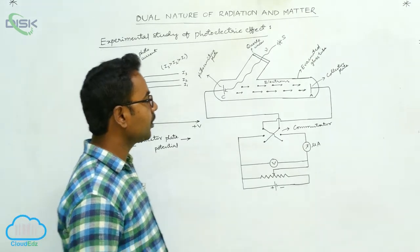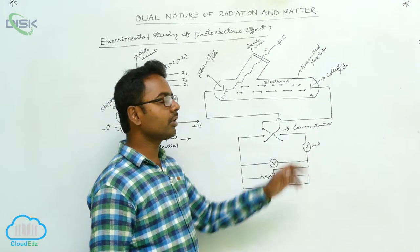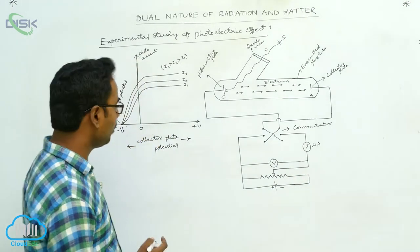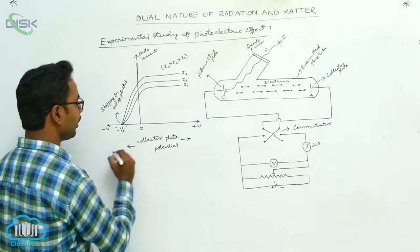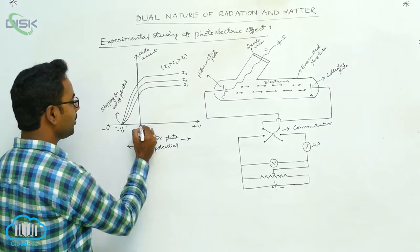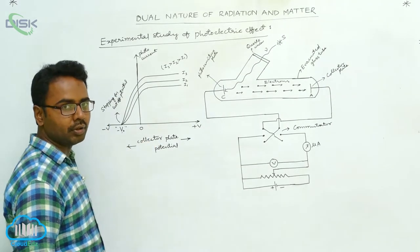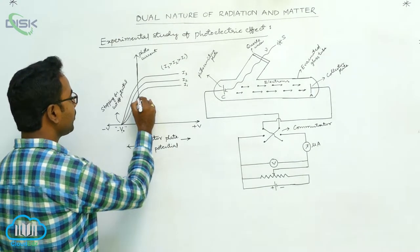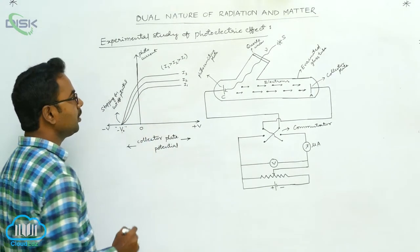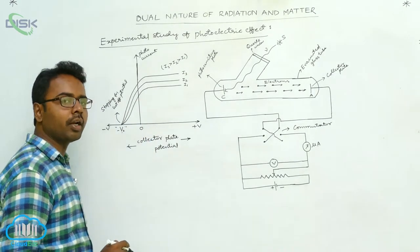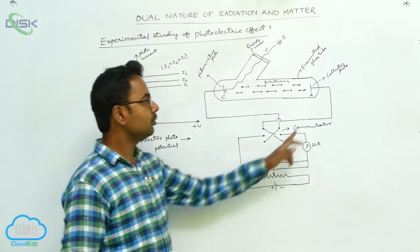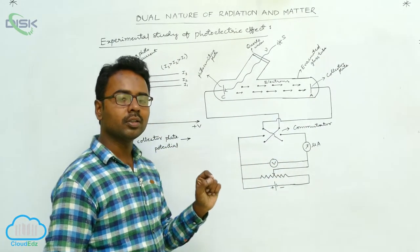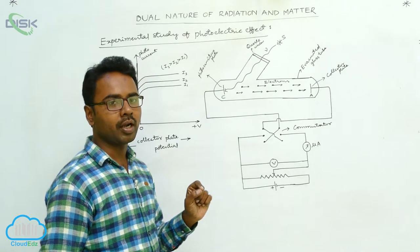Suppose initially the potential given to the collector plate is zero. Here is the point where potential is zero. Even at zero potential, from the graph we understand that there is some photocurrent. How is this possible?